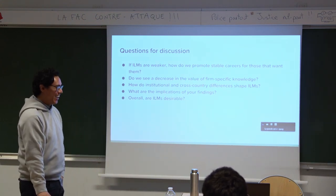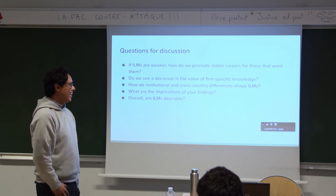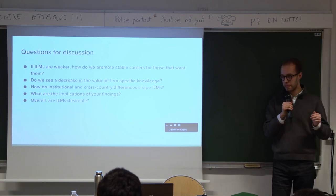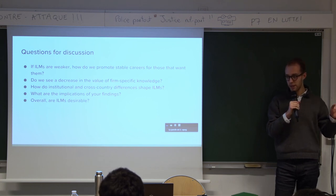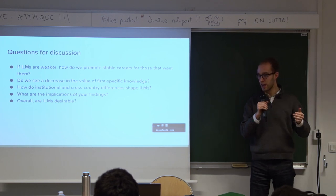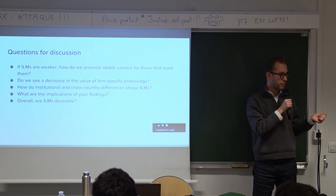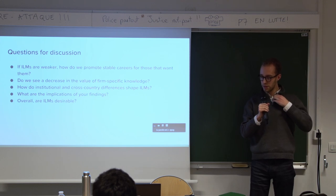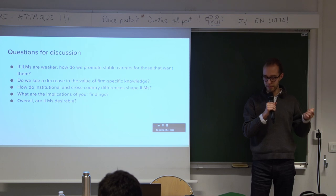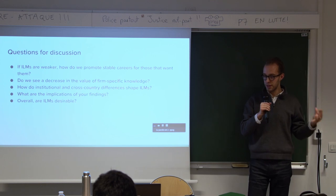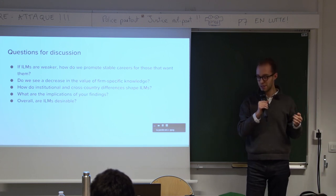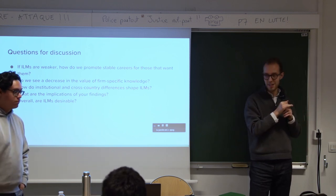We have a few questions for discussion. First: if we accept that ILMs are weaker and these firms are in stable or declining markets, and there is a move towards occupational labor markets, how do we promote stable careers for those who want them — the 'job for life' discourse? Second: do we see a decrease in the value of firm-specific knowledge, and does this impact the existence of ILMs? Third: what more can we say about institutional differences and how they shape ILMs? And overall: are ILMs desirable and something that should be targeted?